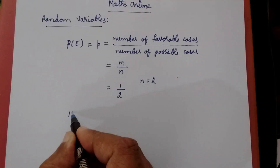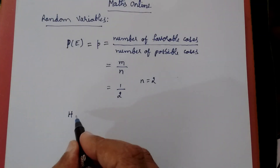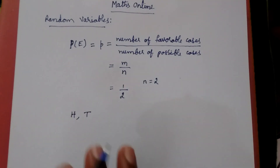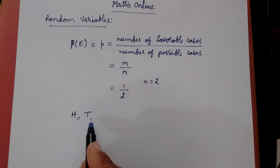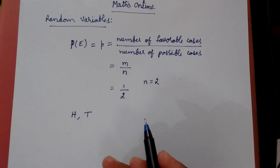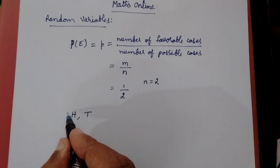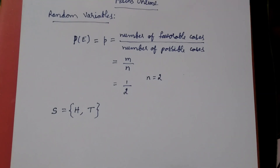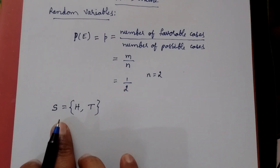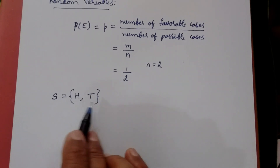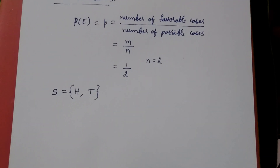Suppose I take head as H and tail as T. Whenever you toss a coin, there are only two possibilities: either head or tail — there is no third possibility. This set is called the sample space, represented as S = {H, T}. These are the two possible outcomes whenever you toss a coin.